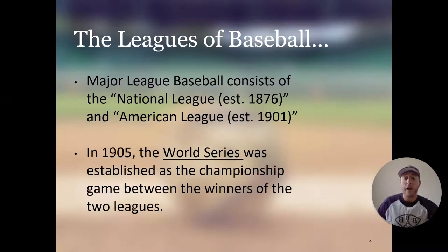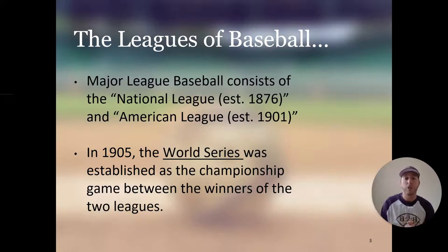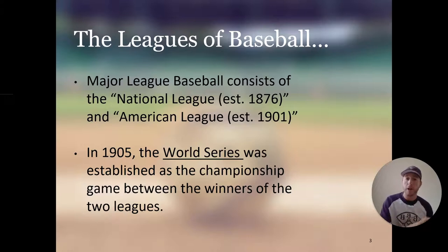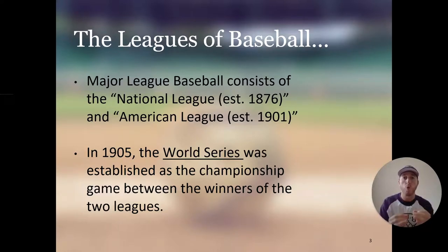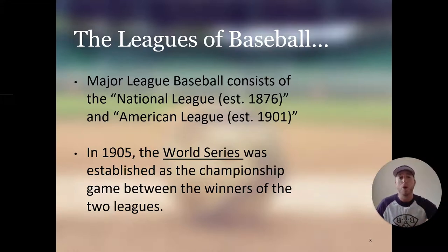In 1905, the World Series was established as the championship between the winners of the two leagues. The National League teams played each other, the American League teams played each other, and the winners of those two leagues met at the World Series. The first World Series was established in 1905.